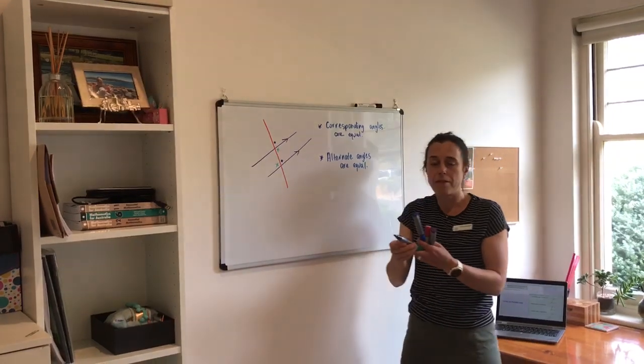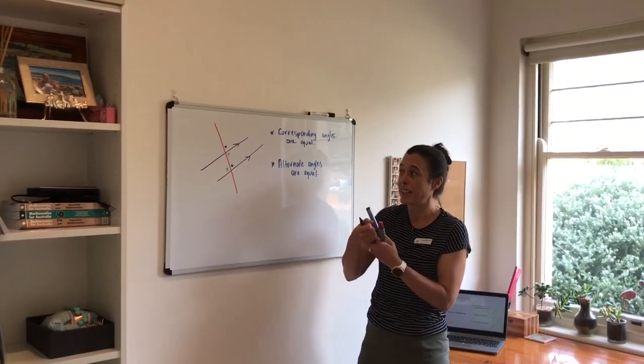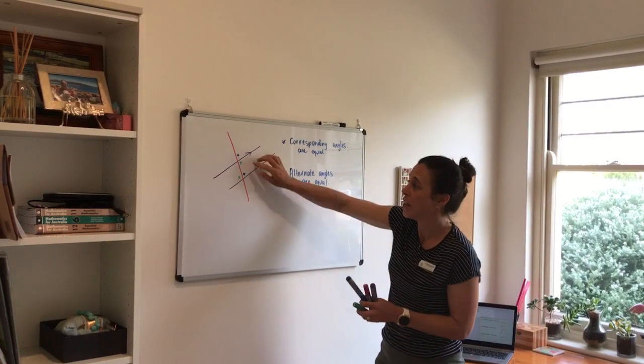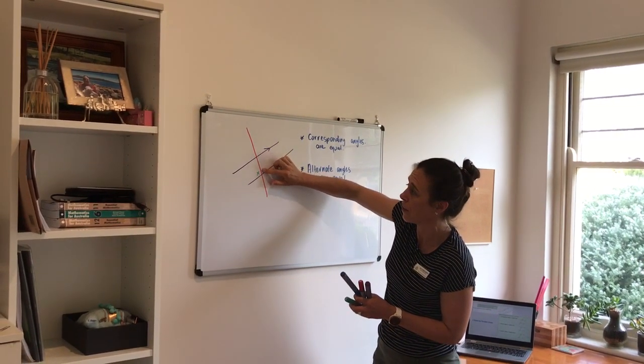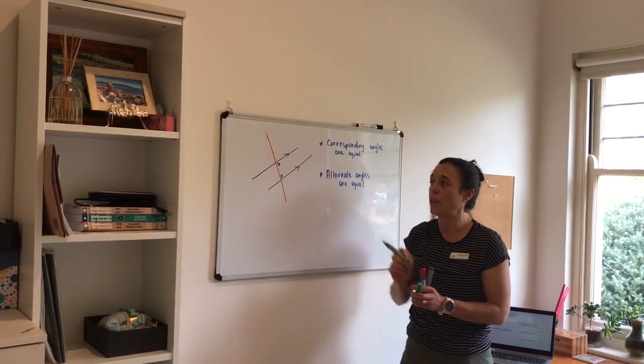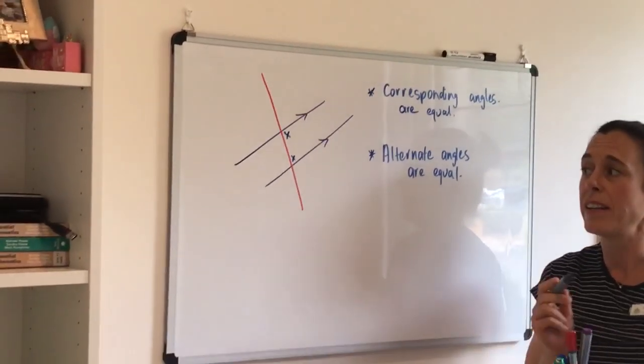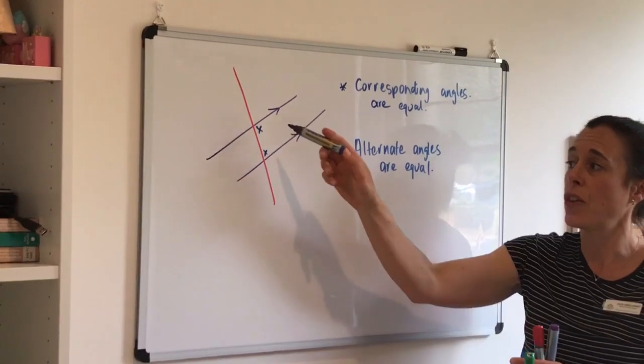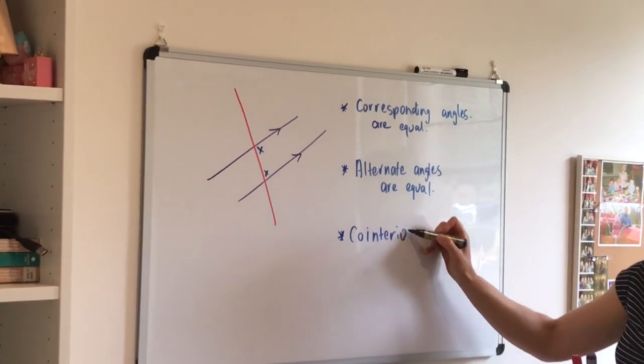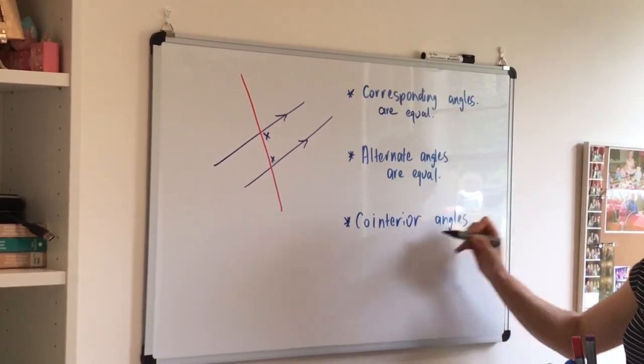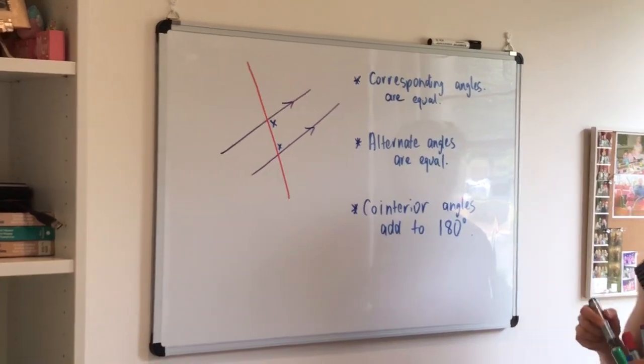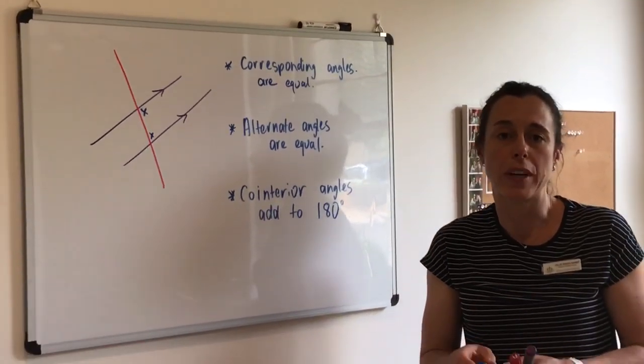And finally we have what we refer to as co-interior angles. Now co meaning both and interior meaning inside. So co-interior angles are when we have two angles on the inside of the parallel lines on the same side of the transversal line. So those co-interior angles must add up to 180 degrees. And now we have our three rules regarding parallel lines.